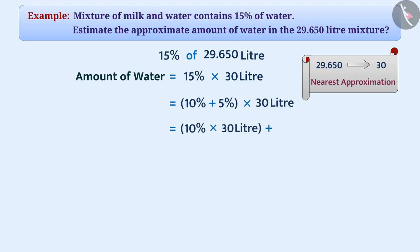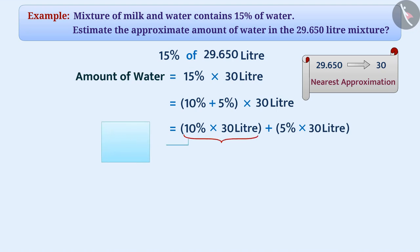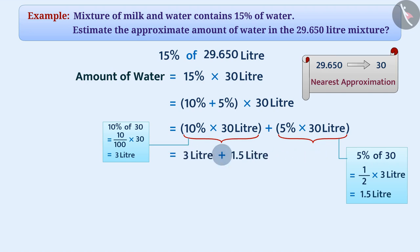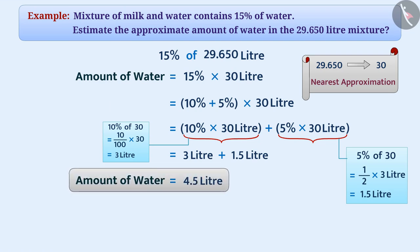Now we will find out 10% of 30, which will be 3 litres. If we do half of this we will get 5% of 30: one by two multiplied by 3 is equal to 1.5 litres. Now we will add both: 3 litres plus 1.5 litres is equal to 4.5 litres. That is, the amount of water will be about 4.5 litres.